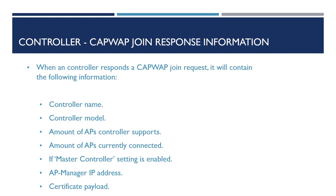In addition, when the controller responds to the join request from our access point, it will respond with the following information: the name of the controller, the model of the controller, the number of APs the controller supports, the number of APs currently connected to the controller, whether the master controller setting has been enabled, the AP manager IP address, and the certificate payload.